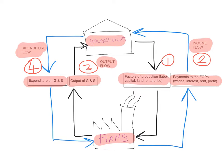In theory, the income flow, the output flow, and the expenditure flow should be identical, because it's all flowing within the economy. This is in a simple and closed economy. Even in a complex and open economy where you have leakages and injections, the output flow, the income flow, and the expenditure flow should equal each other.